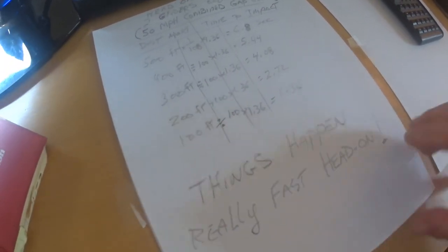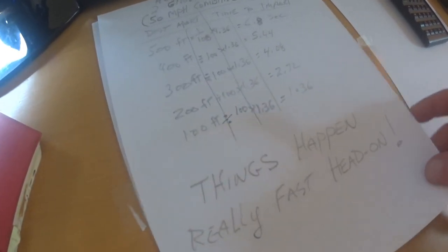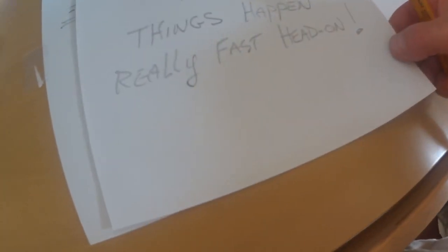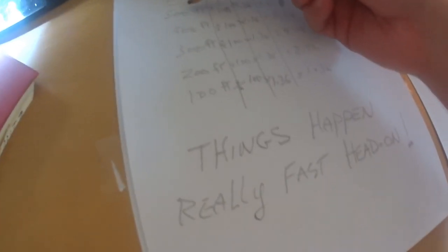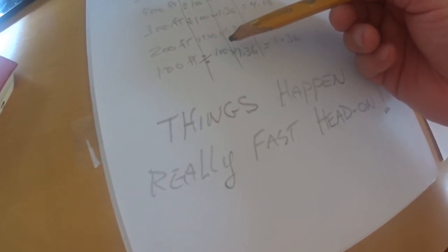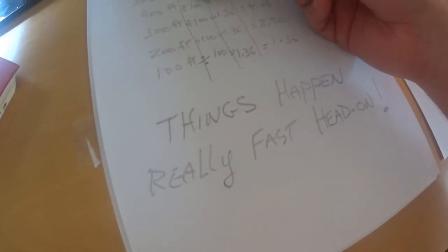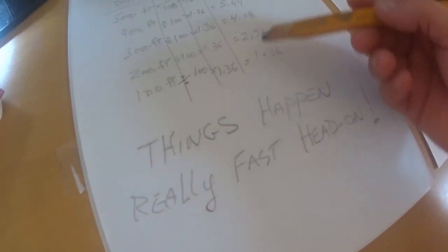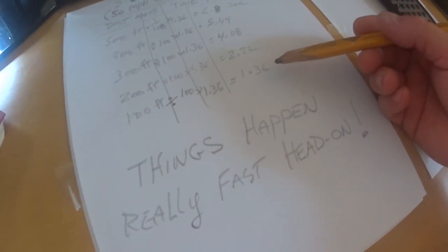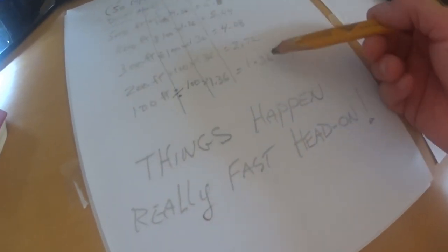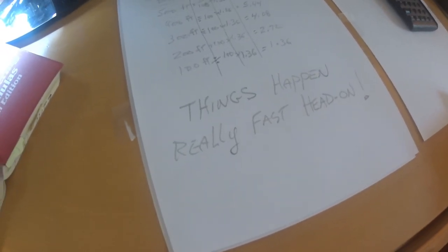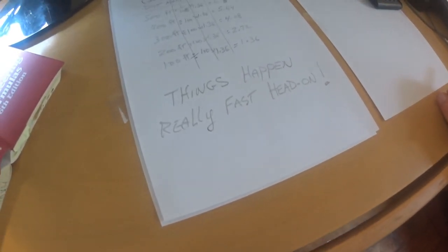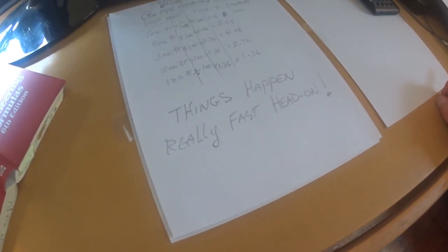So I just used the numbers that I had from previously. That's where that 1.36 came from. It's basically just dividing the distance by 100 and then multiplying it by 1.36 to get back to seconds. So that's seconds to close that gap. What I'm getting at is things happen really fast as far as what happens when you're in a head-on situation with another glider.